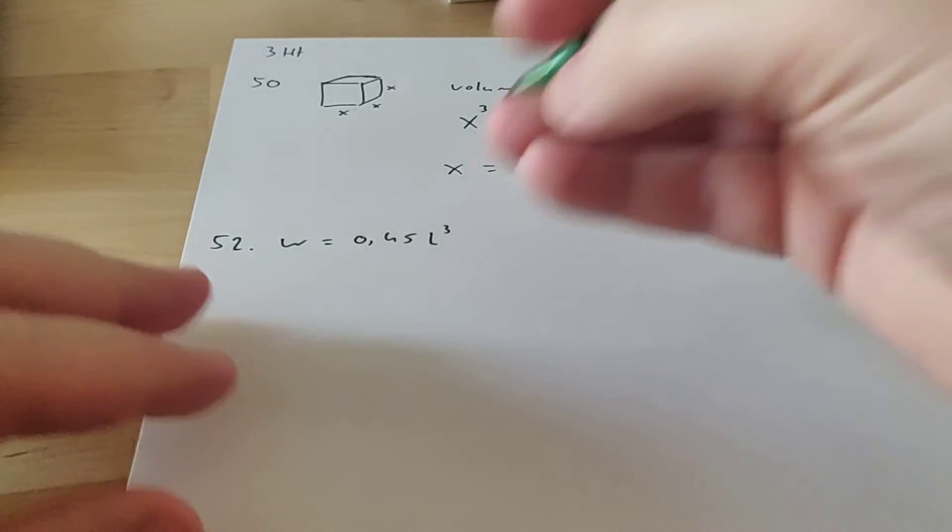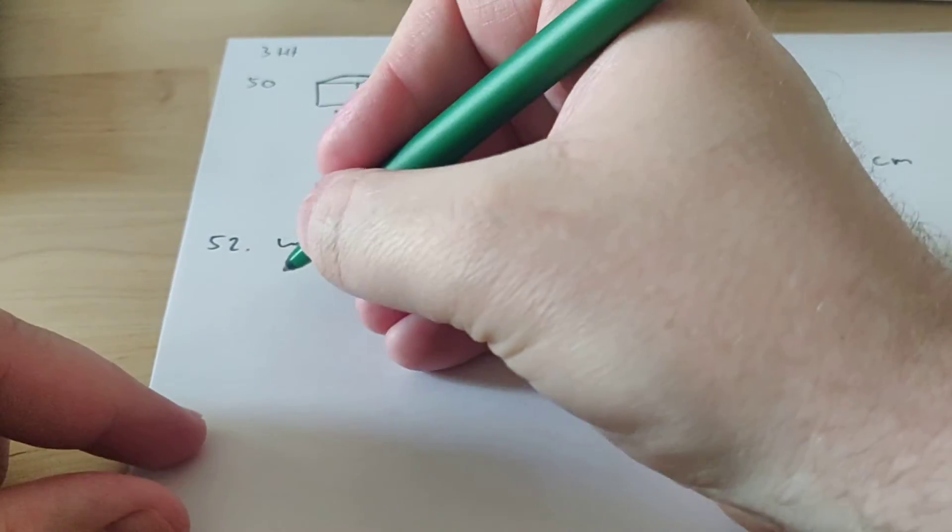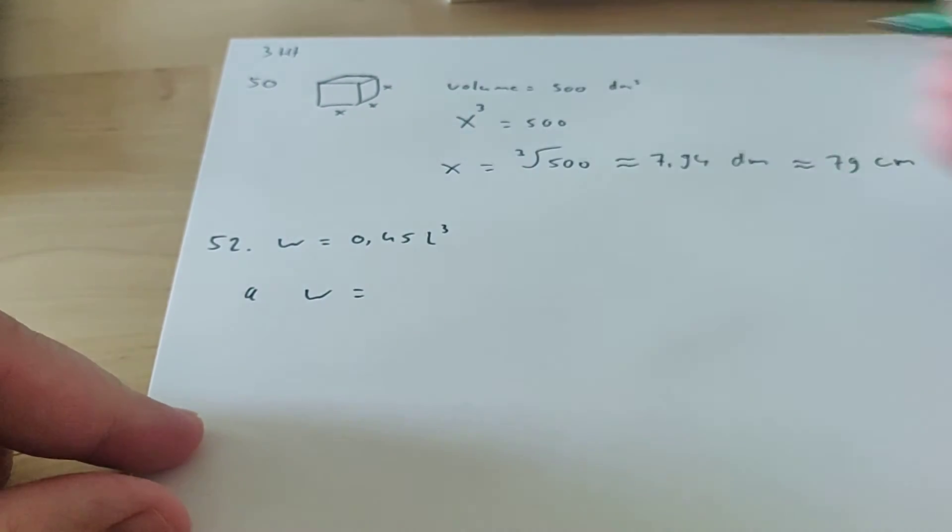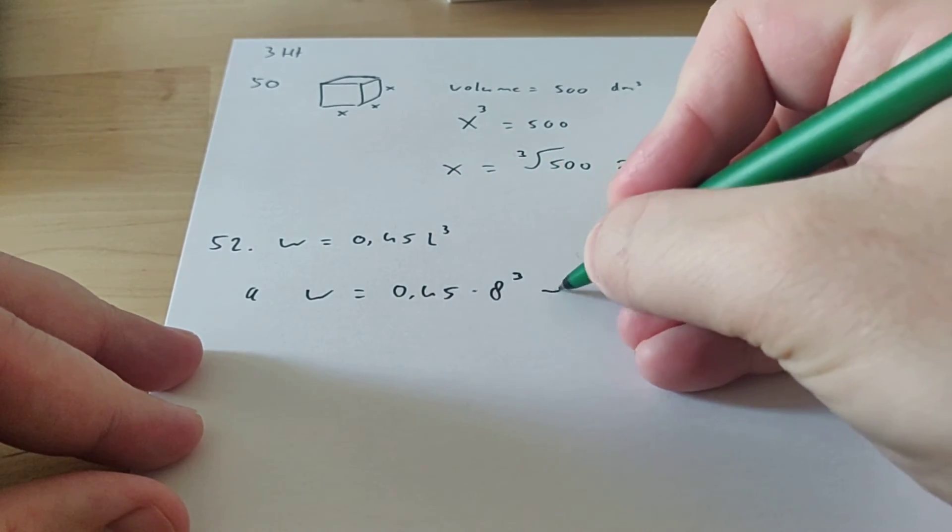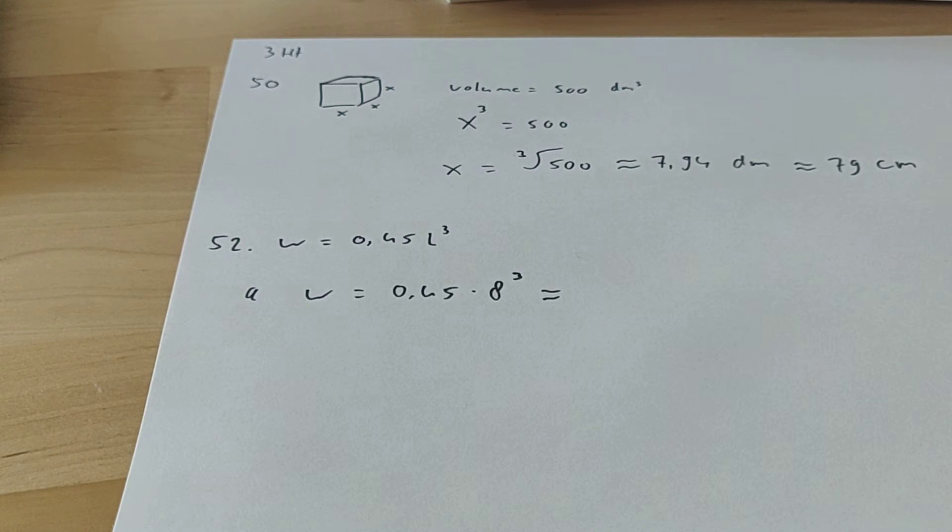So this is what we're going to do. We're going to fill in the 8 here. So the weight of this snake is 0.45 times 8 to the power of 3.